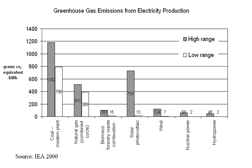These high-impact actions are: (1) not having an additional child — 58.6 tons CO2 equivalent emission reductions per year; (2) living car-free — 2.4 tons CO2; (3) avoiding one round-trip transatlantic flight; and (4) eating a plant-based diet. These appear to differ significantly from the popular advice for greening one's lifestyle, which mostly falls into the low-impact category: replacing a typical car with a hybrid (0.52 tons), washing clothes in cold water (0.25 tons), recycling (0.21 tons), upgrading light bulbs (0.10 tons), etc.